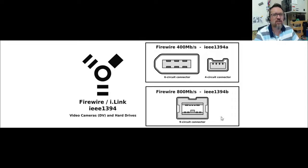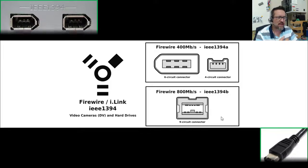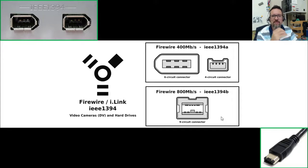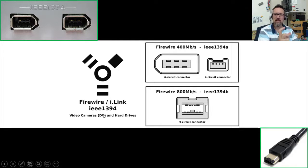Before we had fast USB and HDMI connections, we had FireWire. FireWire is not as popular anymore because it's limited in speed, but it's still around. It was used for media devices — video cameras and digital cameras. The FireWire port enabled speeds of up to 400 megabits per second, but USB 3 and HDMI now surpass that. There's the plug, the port, and the connector. FireWire also carried the IEEE 1394 standard designation.